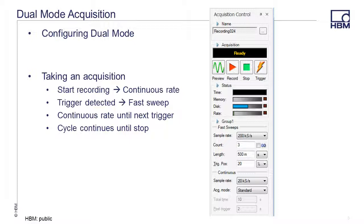The trigger position determines how much of the sweep is pre-trigger and how much is post-trigger. The trigger position can be set in percentage, time, or samples. In this example, with a 500 millisecond sweep length, a 20% trigger position means that 100 milliseconds of the sweep is pre-trigger and 400 milliseconds is post-trigger.